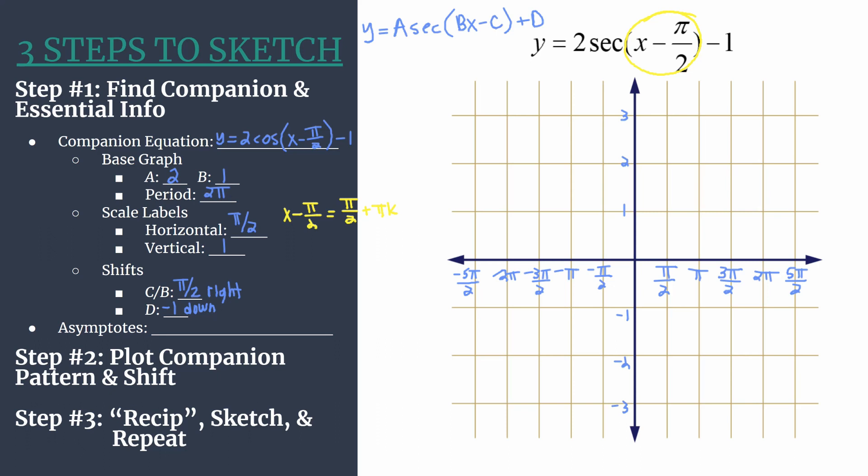Now we just need to solve for x. All you need to do is add pi over 2 to both sides. So we'll write our final asymptotes equation. We have x equals, we know pi over 2 plus pi over 2 is 2 pi over 2, or just pi, and then we still have that plus pi k. So practice substituting in a few different integers for k here. When k is 0, we should have an asymptote at x equals pi. Let k be 1, there should be another vertical asymptote at x equals 2 pi. If k is negative 1, we should see an asymptote at x equals 0, or on the y-axis.